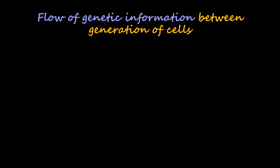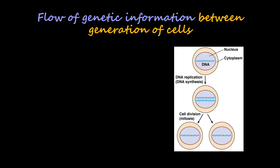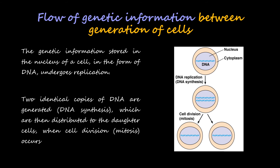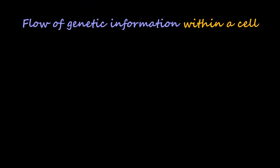Now let us talk about the flow of genetic information between generations of cells. The genetic information stored in the nucleus in the form of DNA undergoes replication — that is DNA synthesis — generating two identical copies of DNA, which are then distributed to the daughter cells when cell division or mitosis occurs. This is how genetic information is transmitted between generations of cells.